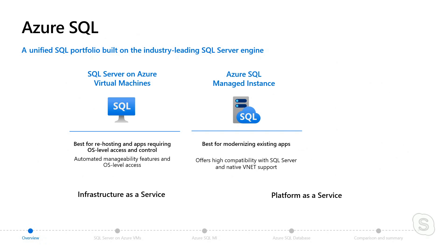You're going to get more benefits as you move towards a platform as a service, or PaaS, type of offering. The first one is Azure SQL Managed Instance. In relation to SQL Server on Azure virtual machine, we're really just going to abstract one more layer. Azure is going to manage the infrastructure and the OS, and you're just going to be responsible for the server. You're also going to get a ton of benefits around being a PaaS service, which you'll learn much more about if you stick around in the series.